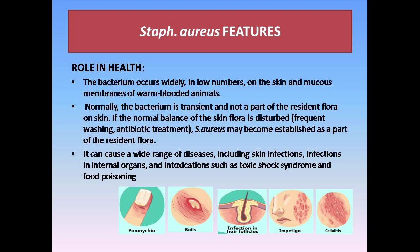Regarding the role of Staphylococcus aureus in health: the bacterium occurs widely in low numbers on the skin and mucous membranes of warm-blooded animals. Normally, the bacterium is transient and not part of the resident flora on the skin. If the normal balance of the skin flora is disturbed through frequent washing or antibiotic treatment, S. aureus may become established as part of the resident flora. It can cause a wide range of diseases, including skin infections, infections in internal organs, and intoxications such as toxic shock syndrome and food poisoning.